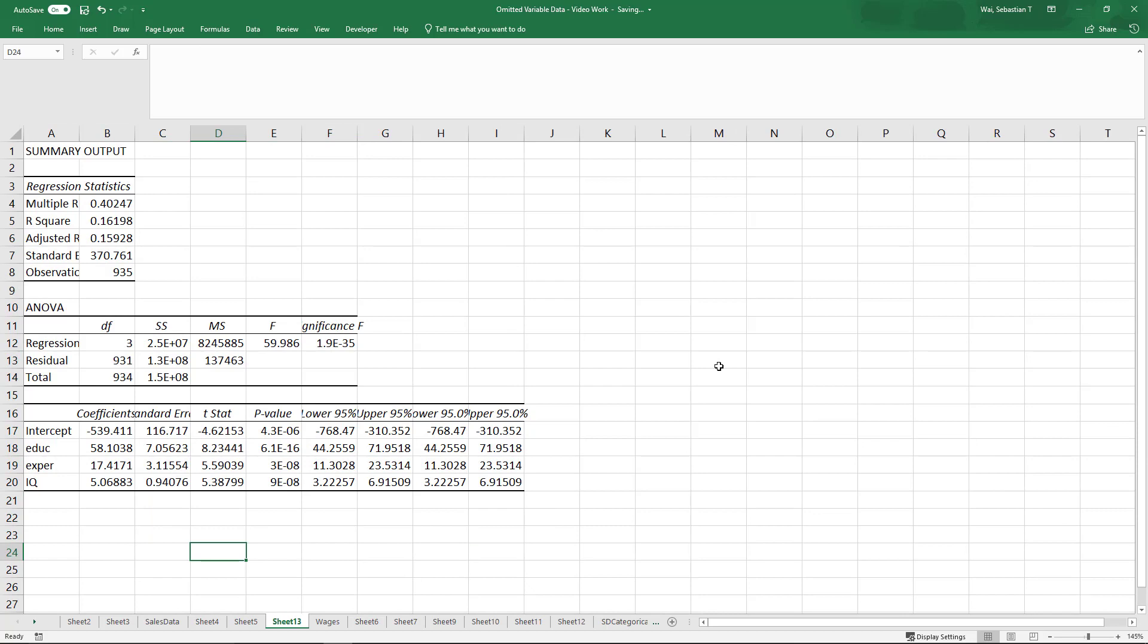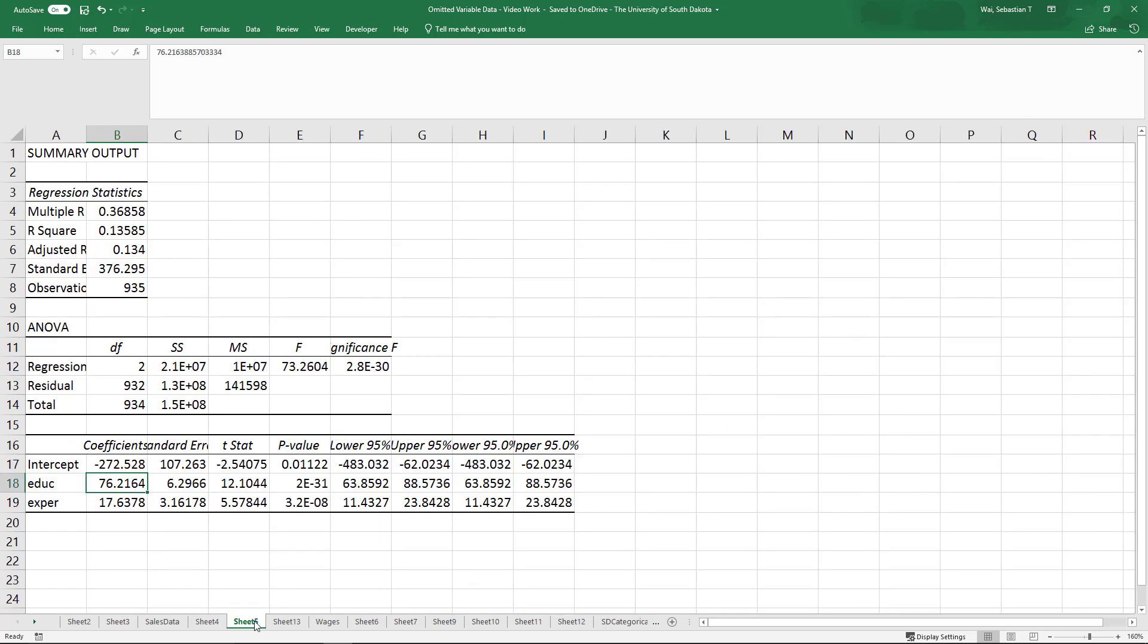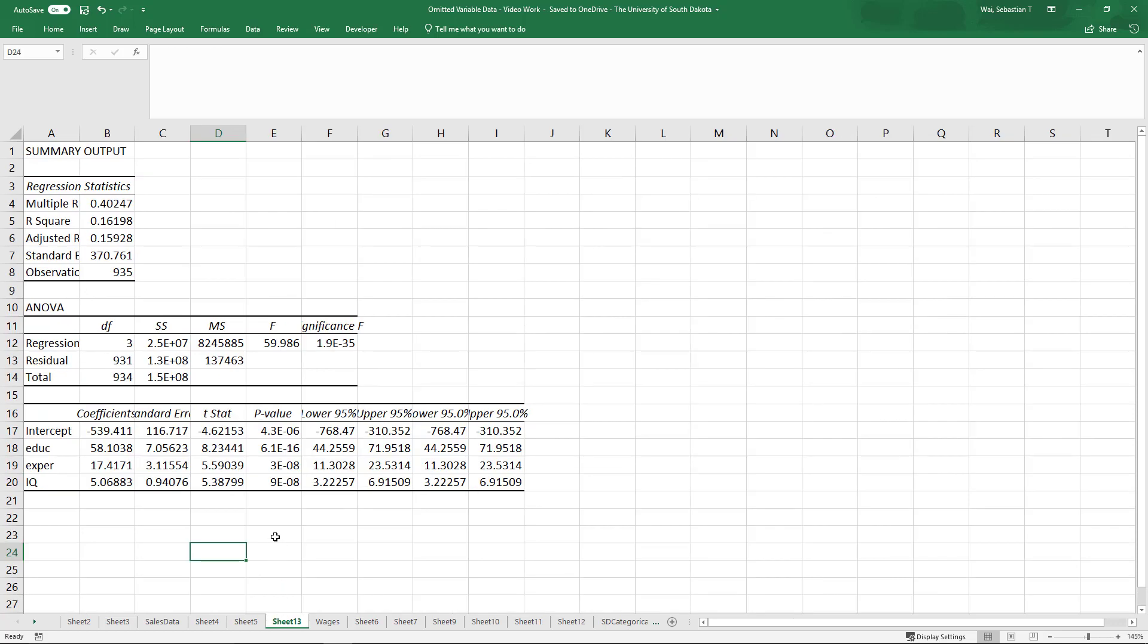First, we notice that the coefficient estimate for IQ is positive, meaning that people with a higher IQ tend to have higher wages. Now look what has happened to the estimate for the education coefficient. It's gone down from $76 to $58 per year of education. By adding IQ, we have removed a positive bias.